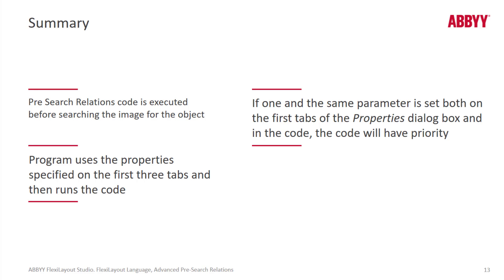In summary, let's remember that pre-search relations code is executed before actually searching the image for that given element. The program looks at the GUI settings from the tabs to the left of the advanced tab first, and then it runs the code, and the code overwrites anything that was set in the GUI if it's referring to the same method or function.